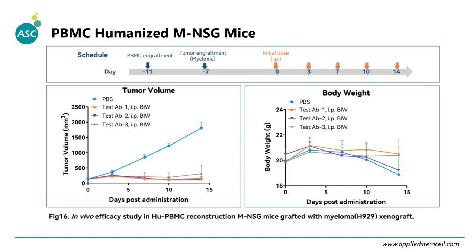Here is a case study using our humanized PBMC model to test the ability of different antibodies to inhibit tumor growth. Using the H929 myeloma tumor model, compared to the PBS control, all three antibodies showed good tumor inhibition. Over the two-week experiment, tumor growth was totally inhibited by these three antibodies compared to the PBS control.